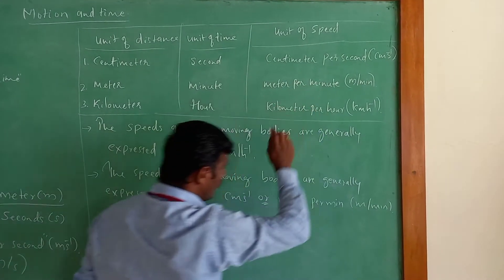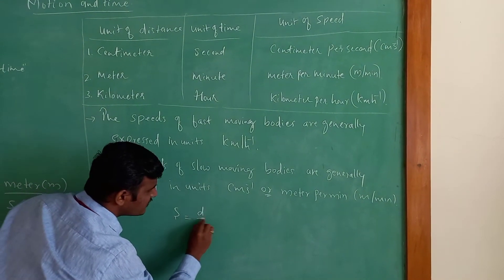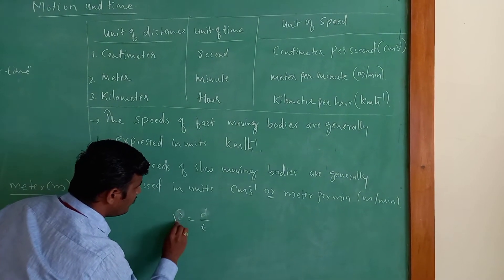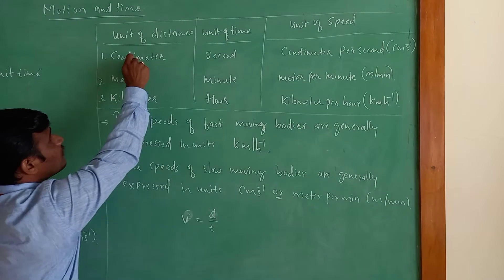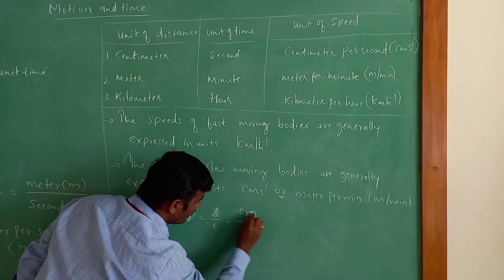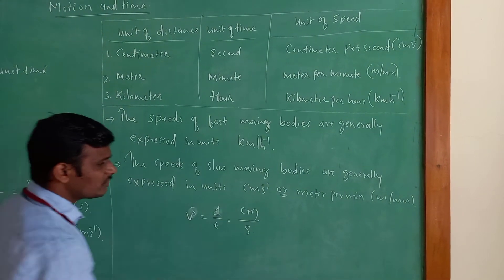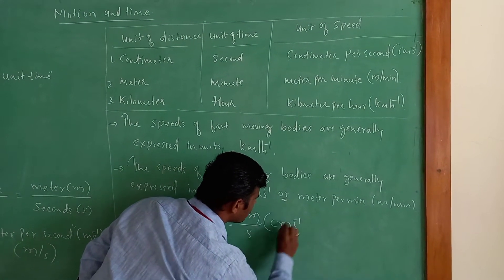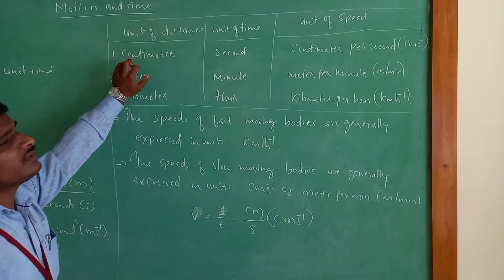You have seen in your vehicle's speedometer — the needle deflects when you increase the accelerator: 30, 40, 50 kilometre per hour. So the speed of a fast-moving body is expressed in kilometre per hour. The speed of a slow-moving body is expressed in centimetre per second or metre per minute.